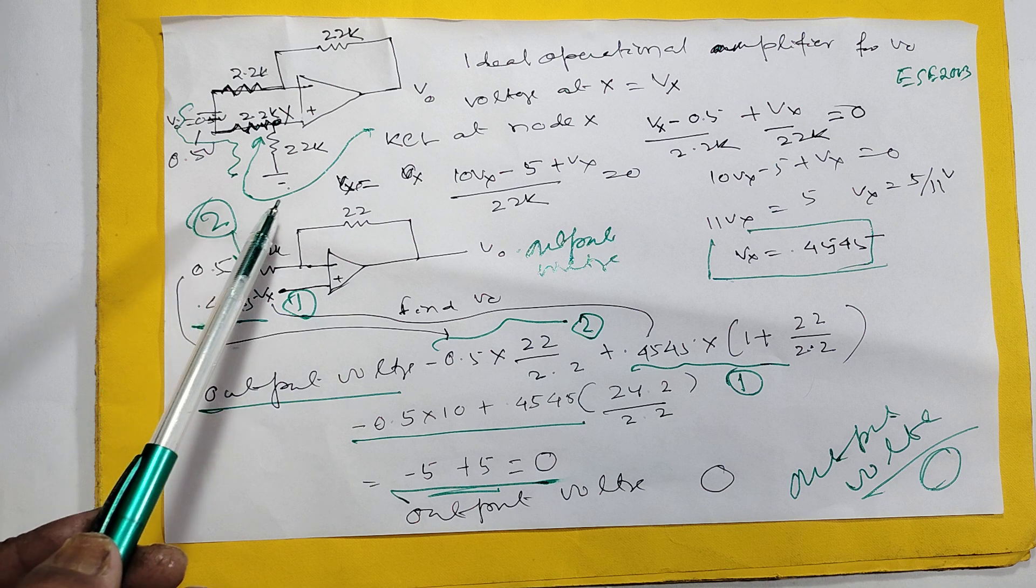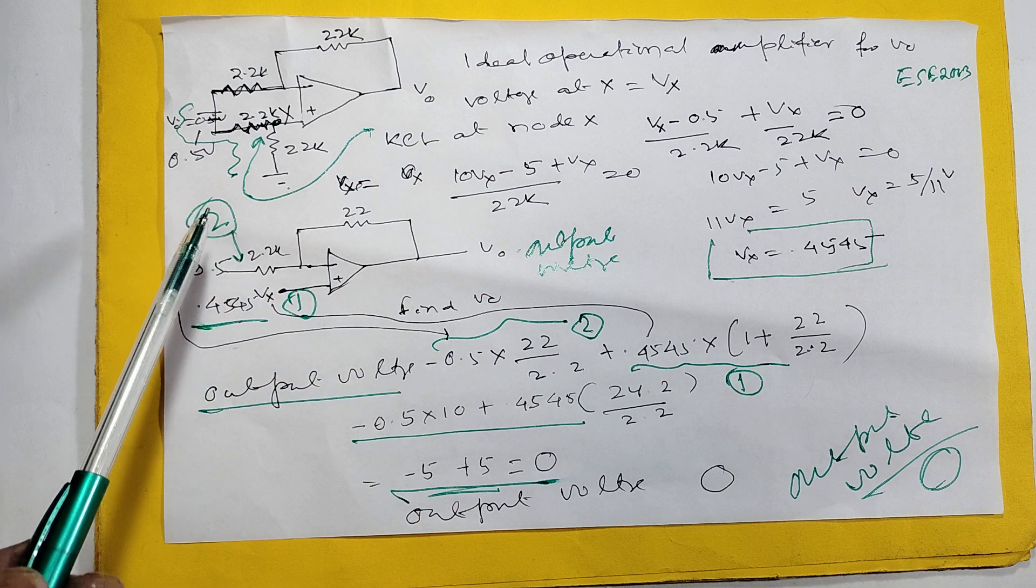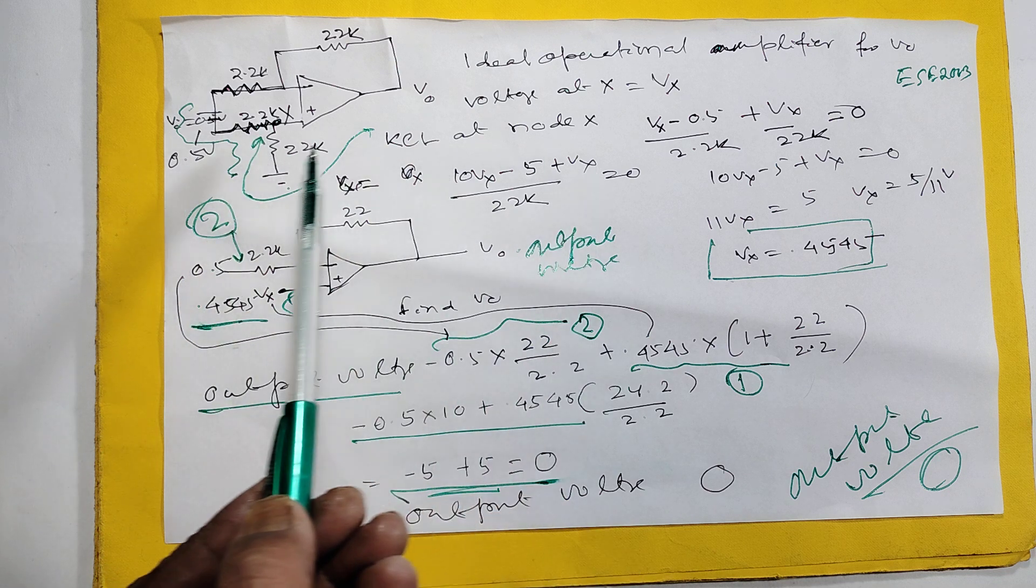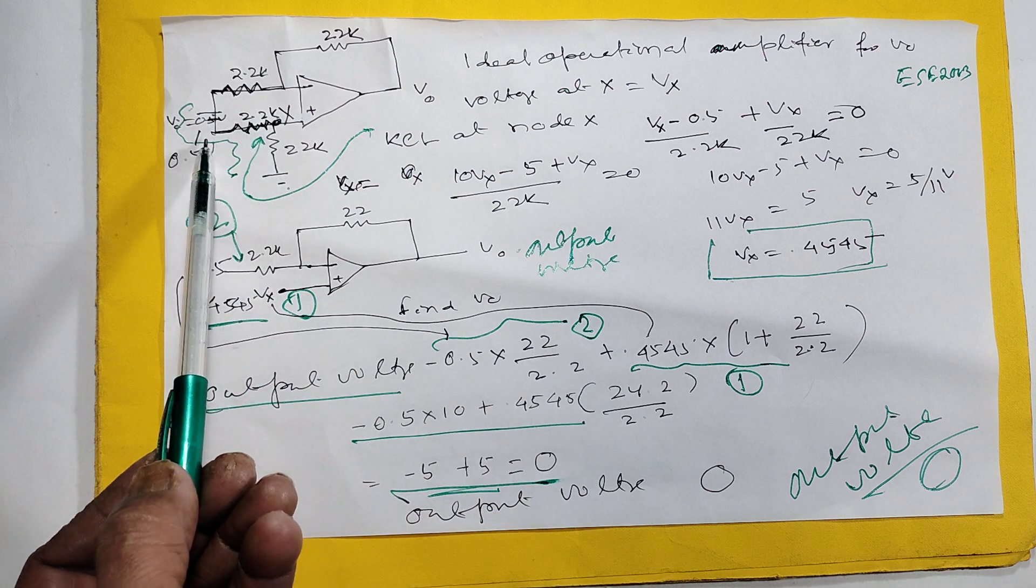That's why I calculated Vx. How I calculated Vx? This is, suppose this is Vx. Vx minus 5 minus 0.5, that's by 2.2k, because this is a resistance.